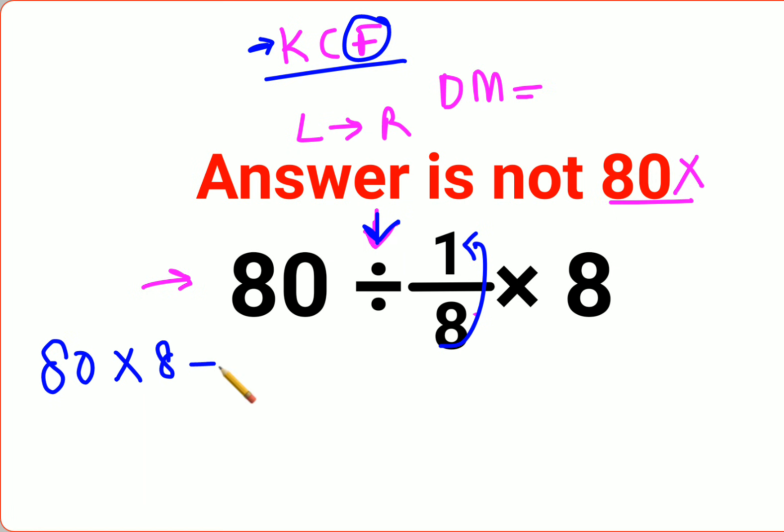The reciprocal of 1/8 is 8. And then we again have multiplied by 8. So we have 80 × 8 which is 640 × 8, which gets you 5120.